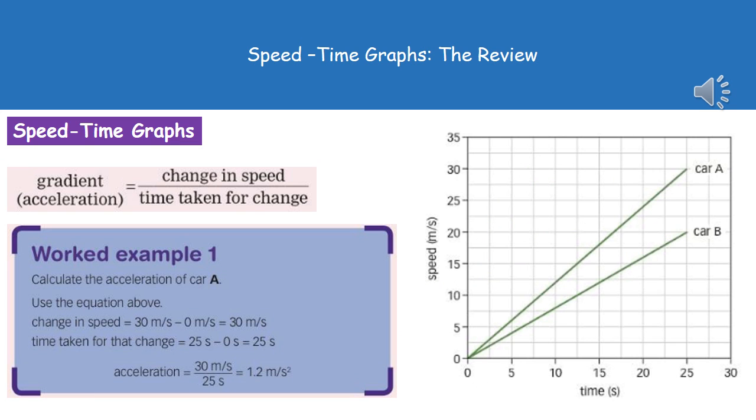To use this graph to calculate our actual acceleration, what we do is the change in speed divided by the time taken for the change to take place. So the kind of question we might get is to calculate the acceleration of car A.